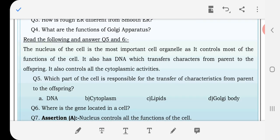Read the following and answer questions 5 and 6. The nucleus of the cell is the most important cell organelle as it controls most of the functions of the cell. It also has DNA which transfers characters from parent to offspring. It also controls all the cytoplasmic activities.